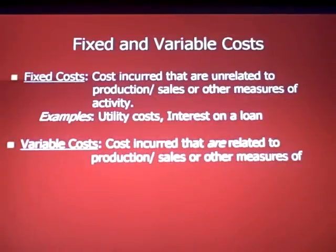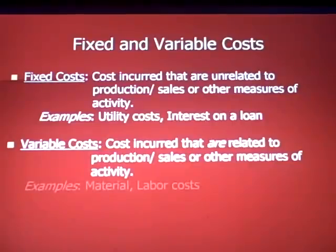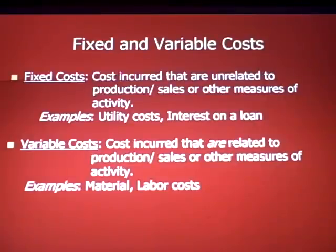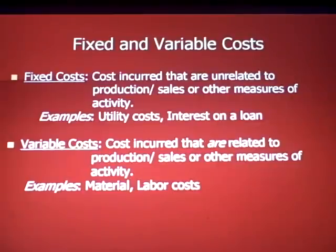Variable costs are costs incurred that are related to production, sales, or some other measure of activity. For example, if you're making Levi's jeans, the cost of denim is a variable cost — it depends on how many jeans you're making and selling. At a Chrysler plant making cars, your labor costs depend on how many cars you're producing.